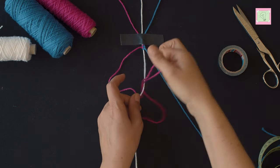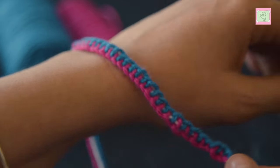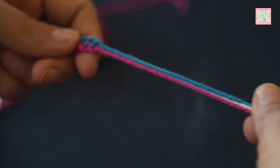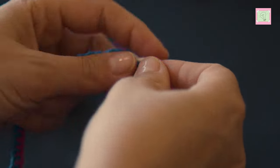Continue knotting until your bracelet is long enough to fit around your wrist. At the end, make a knot again and cut the threads off after about 10 centimeters or 4 inches.